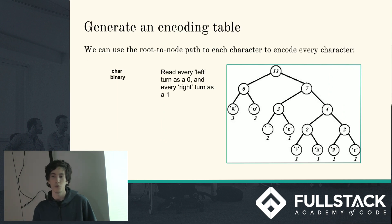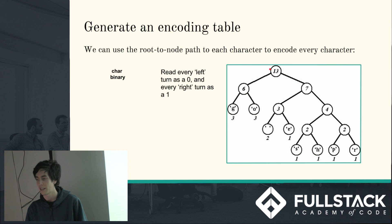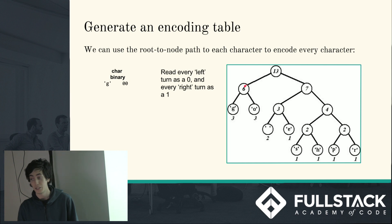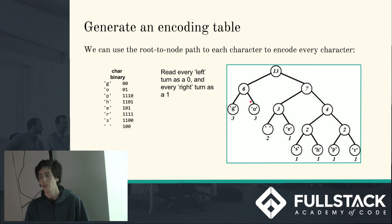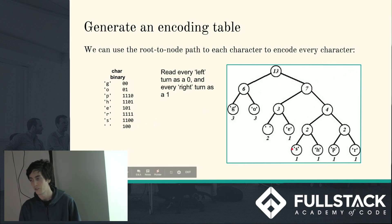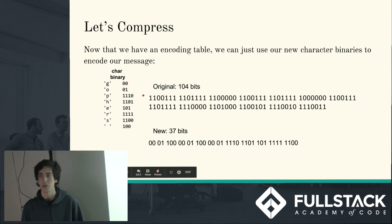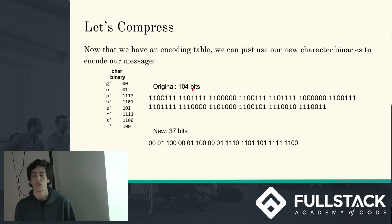We can use the root-to-node path of every character to find the optimal encoding for each one. Starting at the root node 13, to get to a character: every time you go left you add a 0, every time you go right you add a 1. To get to G we go left then left — 0, 0. To get to O we go left then right — 0, 1. For S: right, right, left, left — 1, 1, 0, 0. Now instead of using ASCII binary numbers to encode each character, we use our new encodings. The original was 104 bits; we can now encode it in 37 bits — a whole lot better.